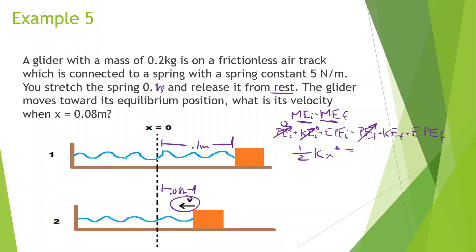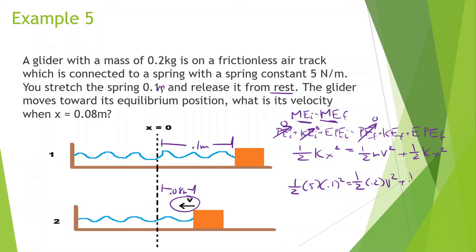At the end: no gravitational PE (still on the ground), yes KE (it's moving), and yes elastic PE (still stretched/compressed). So the equation becomes: one-half k times (0.1)² equals one-half m v² plus one-half k times (0.08)². Canceling the one-half throughout: 5 × (0.1)² minus 5 × (0.08)² divided by 0.2 gives a velocity of 0.3 meters per second.